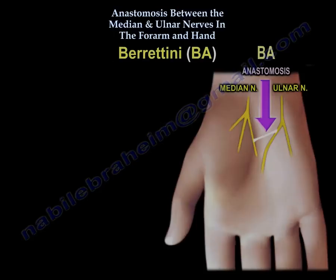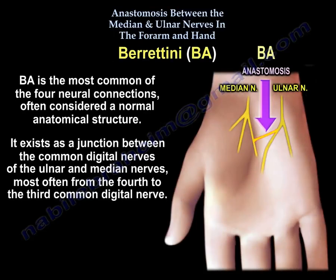Berrettini is the most common of the four neural connections, often considered a normal anatomical structure. It exists as a junction between the common digital nerves of the ulnar and median nerves, most often from the fourth to the third common digital nerve.